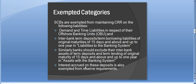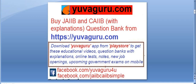This was part 1 of the videos for CRR and SLR. You can follow parts 2 and 3 for complete knowledge of CRR and SLR. Again, you can buy the JIB and CIB question bank from uvaguro.com, and you can download the uvaguro app from the Play Store to get educational videos, question banks, and more.